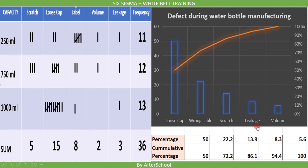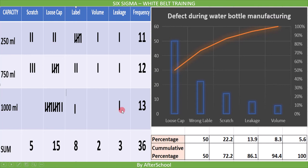Now let's see an example of a Pareto chart. Earlier we saw an example of a water bottle production plant, and now we will continue with it. This was the check sheet we discussed, where we had 250 ml, 750 ml, and 1000 ml bottles, and these were the corresponding defects. Now we will use this data to build a Pareto chart.